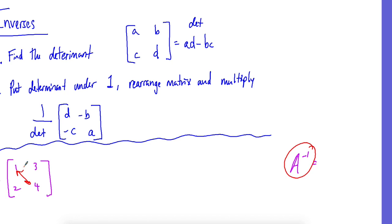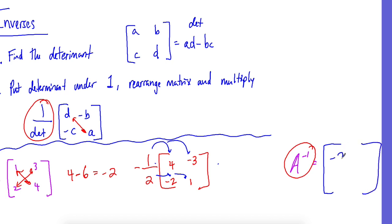we do the determinant first. We're going to do one times four is four minus three times two is six, which is negative two. Then you take your determinant, put it under one, and we rearrange our matrix. So four and one they switch spots, and then we change the signs of B and C. Then we distribute our negative one-half to each thing. Four times negative one-half is negative two. Negative three times negative one-half is positive three over two. Negative two times negative one-half is positive one, and one times negative one-half is negative one-half. That would be your inverse.